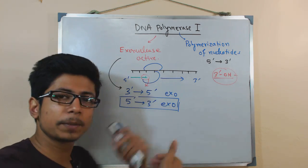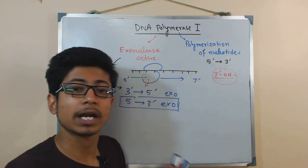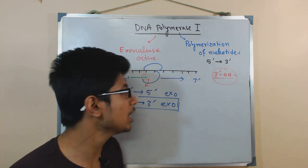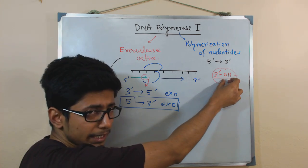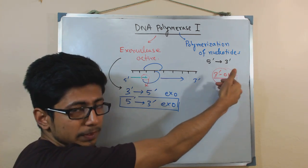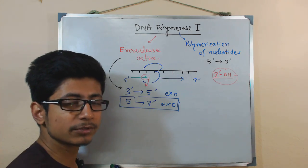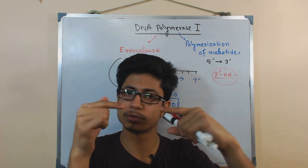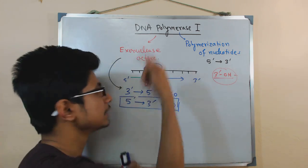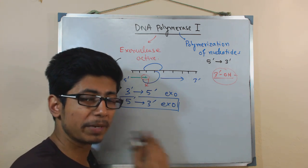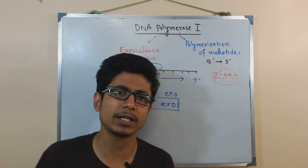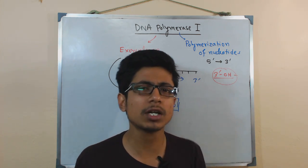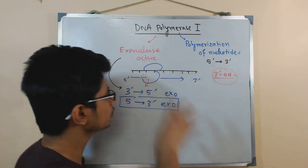After DNA replication is done, the cell needs to remove those RNA primers because it doesn't want RNA material there — it wants everything as deoxyribonucleotides. So the cell removes the RNA primer and replaces that region with DNA. Those replacement tasks are performed by DNA Polymerase I. Also, if there is any gap present between two strands, that gap filling is also done by DNA Polymerase I. This also makes sense: it doesn't need to polymerize a huge stretch — only a small stretch to replace the primer.